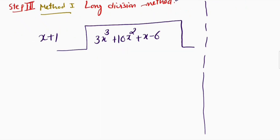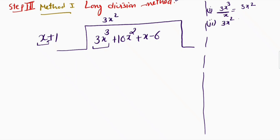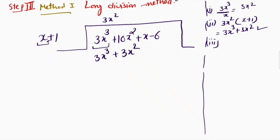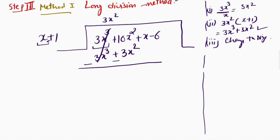I'll write 3x³ + 10x² + x − 6 inside the division bracket and (x + 1) outside. First step: divide 3x³ by x to get 3x². Second step: multiply 3x² by (x + 1) to get 3x³ + 3x². Third step: change the sign, so they cancel. Subtracting gives 10 − 3 = 7x².